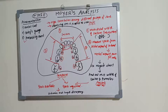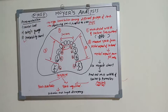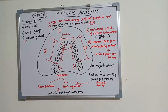In mixed dentition analysis, as the name suggests, it has both deciduous and permanent teeth. In Moyers analysis, what we are trying to find out is the prediction of space required from the available teeth. From the available few teeth, we are predicting the space discrepancy for the future upcoming teeth.